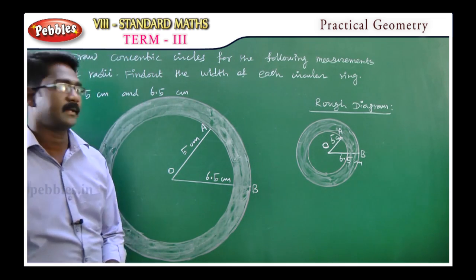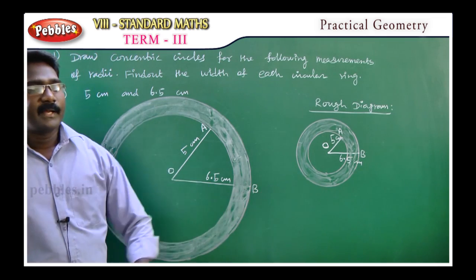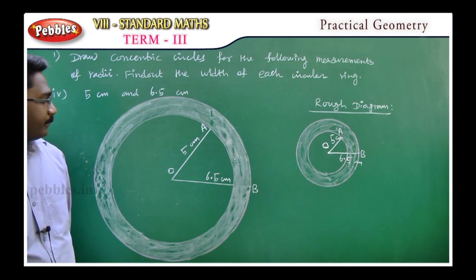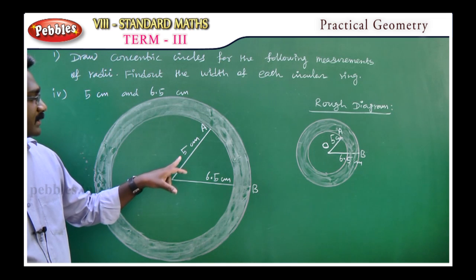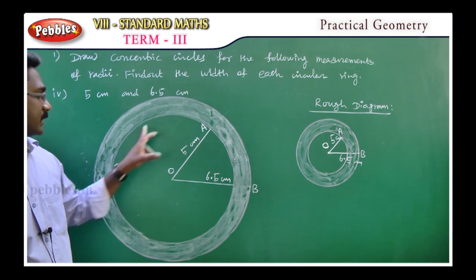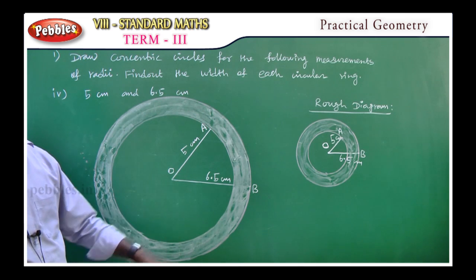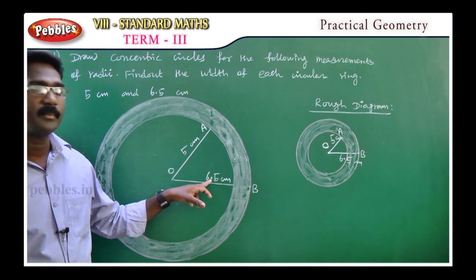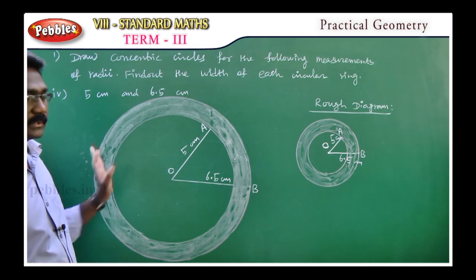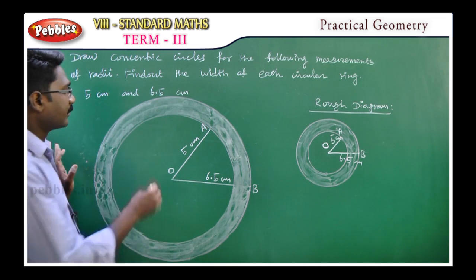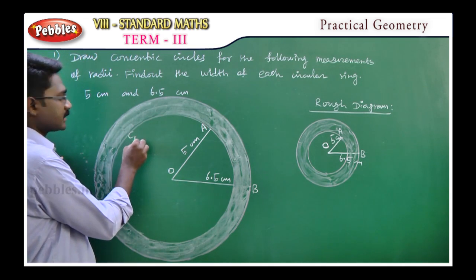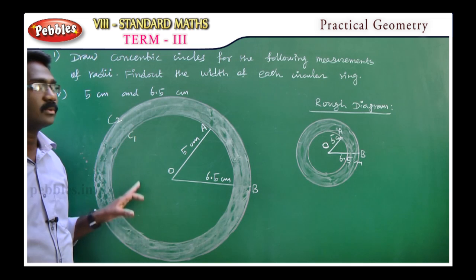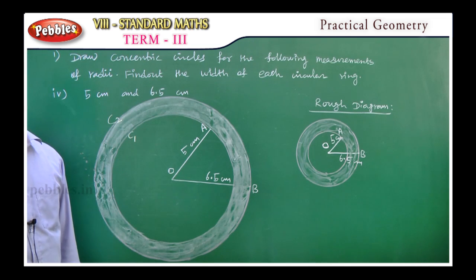Construction steps: First, draw a rough diagram for the given measurement. Second, with O as center and 5 centimeters as radius, draw a circle. Third, again with O as center and 6.5 centimeters as radius, draw a circle. C1 is the first circle, C2 is the second circle. C1 and C2 are the concentric circles of our construction.